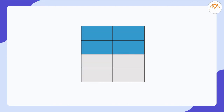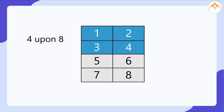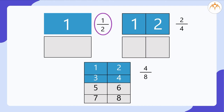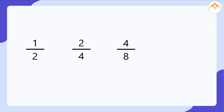Now let's make one more fold, say horizontally. What do you see? How many parts are colored and out of how many equal parts? Now four parts are colored out of a total of eight parts. The colored part can be indicated as four upon eight, or four divided by eight. Can you see that four divided by eight is still representing half of the paper which is colored, just the same as 1 divided by 2 and 2 divided by 4?